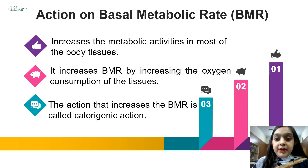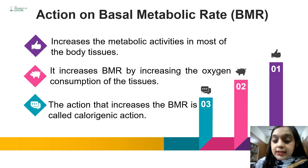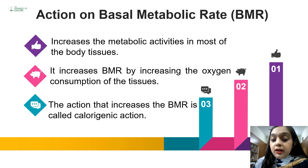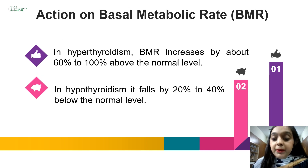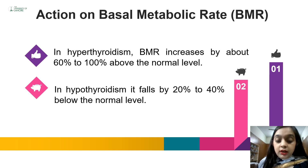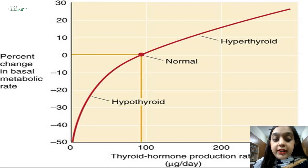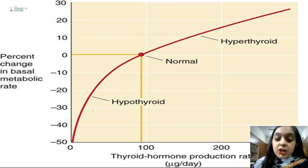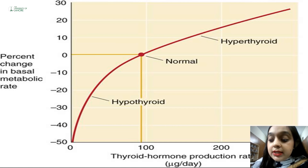Thyroid hormones increase metabolic activities in most body tissues, resulting in an increased basal metabolic rate (BMR). They achieve this by increasing oxygen consumption of cells and through the calorigenic action of the body. In hyperthyroidism, BMR increases by about 60 to 100% above normal, while in hypothyroidism it falls by 20 to 40% below normal. This graph shows the relationship between percent change in BMR and thyroid hormone production rate — decreased hormone production reduces BMR, while increased production raises it.